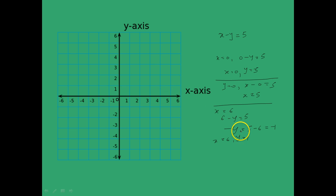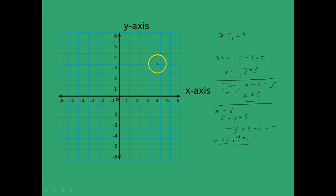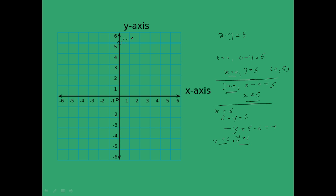Let's plot these points on the Cartesian plane as we learned in the last chapter. x equal to 0 and y equal to minus 5 forms the ordered pair 0 comma minus 5, which we plot here. Next we have 5 comma 0.